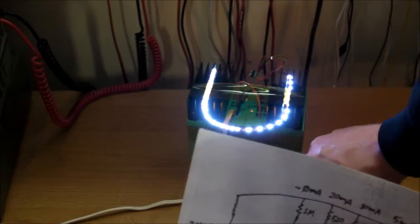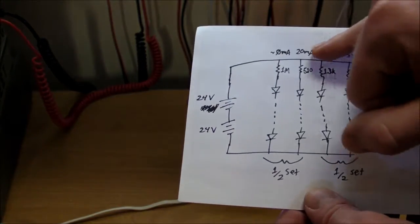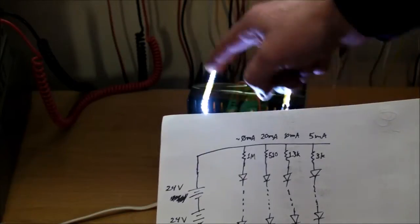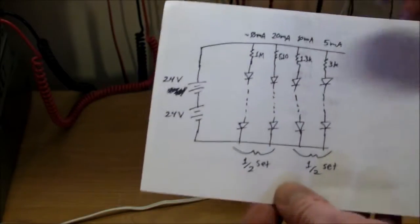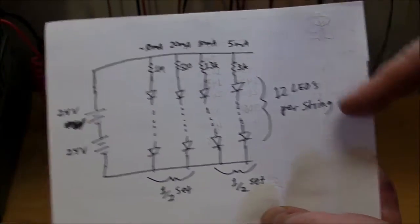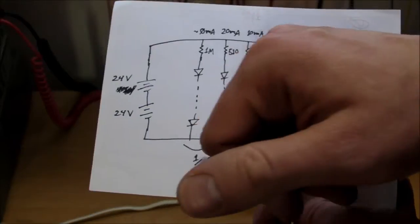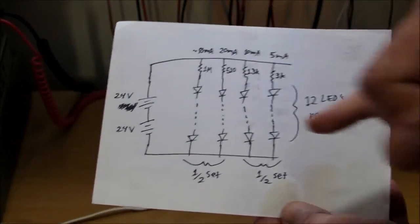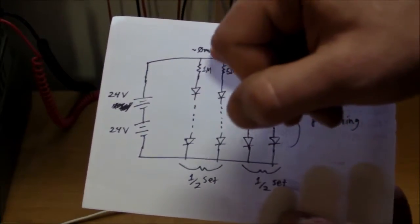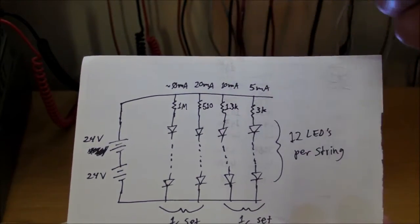I've got these two Phoenix Contact power supplies, 24 volts each, and those are powering the LEDs. There are four individual strings of LEDs contained within this whole set, and each one has twelve LEDs per string. Half of them are alternating one after another on one half of the set, the other half are alternating one over the other on the other half.